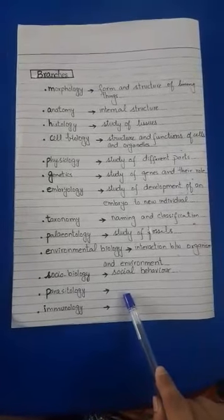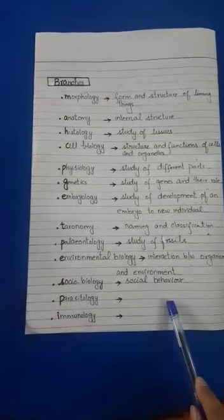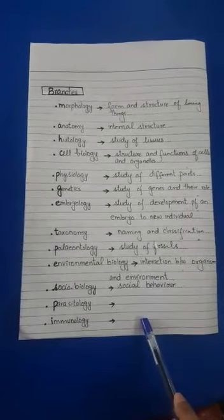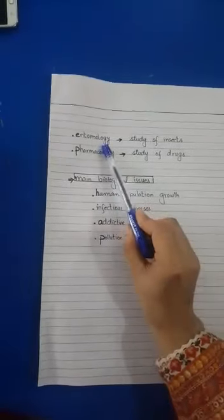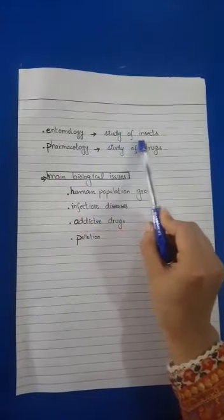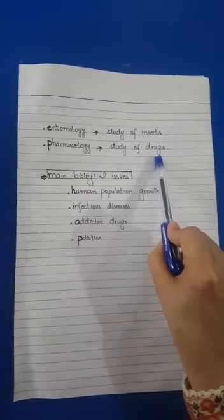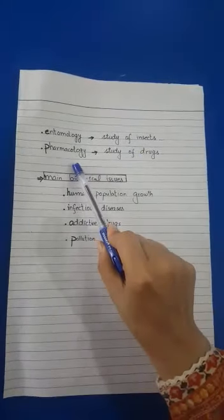Parasites are microorganisms which live in a host and gain food, and in return they can harm them. Immunology is the branch of biology that deals with the study of the immune system of all living things. Entomology deals with the study of insects. Pharmacology means the study of drugs — how medicines are prepared and what their applications and uses are.